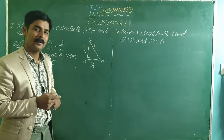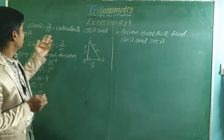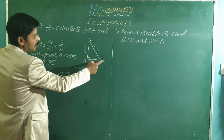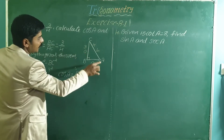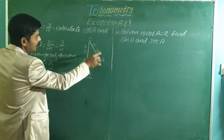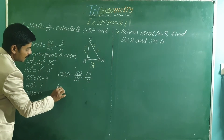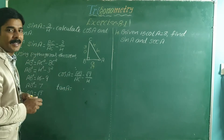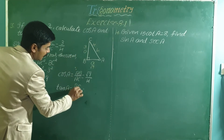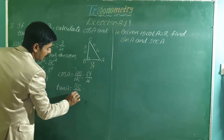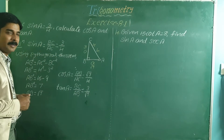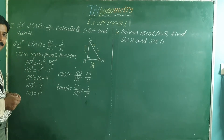Now we know all three sides of the right-angle triangle. Cos A is adjacent over hypotenuse, so AB over AC, which equals root 7 over 4. Tan A is opposite over adjacent, so BC over AB, which equals 3 over root 7. Hope you understood.